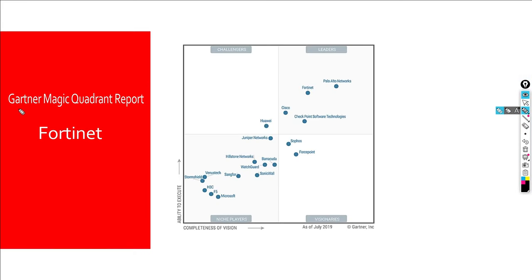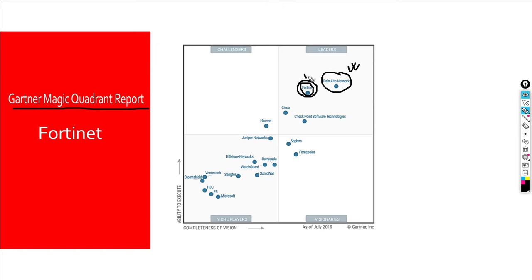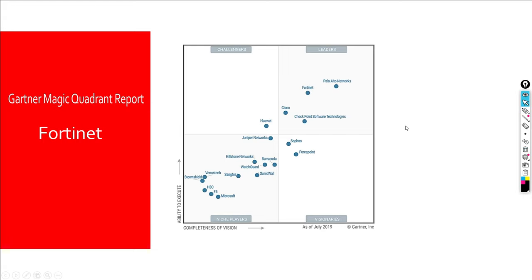According to the Gartner Magic Quadrant report, Fortinet is a runner-up while Palo Alto is securing the first place. However, Fortinet is also recognized as a leader, and with their very large product line they are maintaining their quality as well.